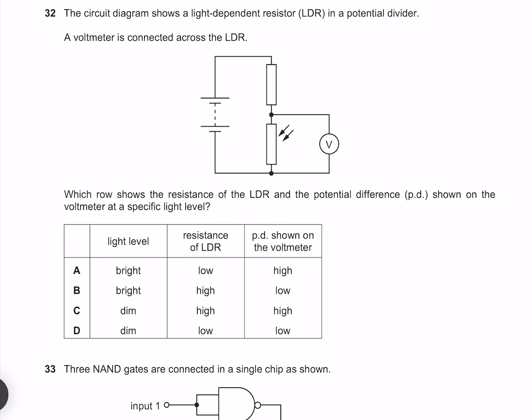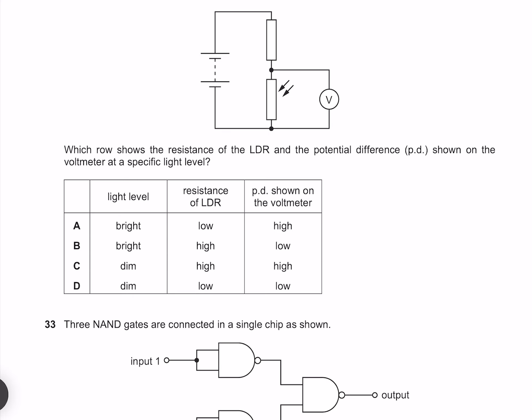The circuit diagram shows a light dependent resistor in a potential divider. A voltmeter is connected across the LDR. Which row shows the resistance of the LDR and the potential difference shown on the voltmeter at a specific light level? The resistance of an LDR decreases in response to bright light, which means that this is true and this is not. If the light is dim we have a high resistance which means that this is true and this is not. If the resistance on our LDR is high then we're going to get a higher voltage across it. Therefore this is true. On the other hand if our resistance was low then we would likewise expect our voltage to be low, not high. Our answer must therefore be C.